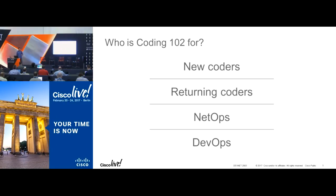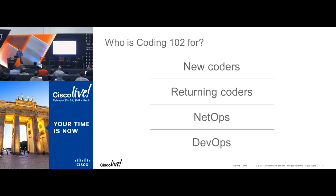Net Operations: if you're working with operations folks, this will work for you as well because we're doing APIC-EM, which is a network controller, so you'll quickly see how that ties in and learn how to write code to use it. DevOps: if you're a developer who's been working with ops, picking up APIC-EM — we've got labs available so you can learn about networking and how it all ties together, whether you have a development or networking background.